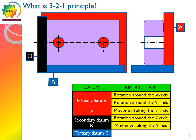Similarly, the tertiary datum C is going to restrict movement along x-axis. Tertiary datum restricts 1 degrees of freedom. The primary datum restricts 3 degrees of freedom. The secondary datum restricts 2 degrees of freedom. The tertiary datum restricts 1 degrees of freedom.